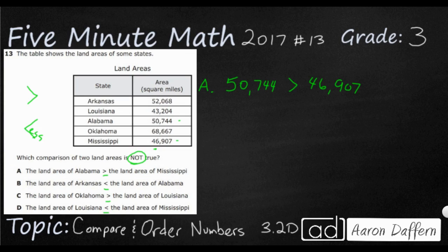So we need to look at, is 50,744 greater than 46,907? Well, you always start with the largest place value of each. So they both go to the ten thousands place. And you just evaluate that digit first.